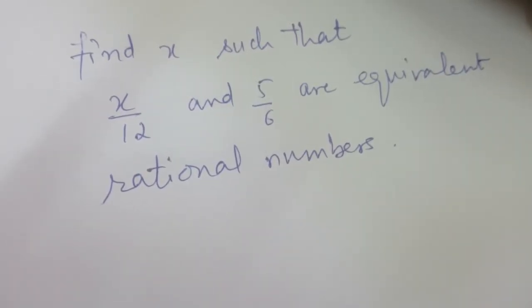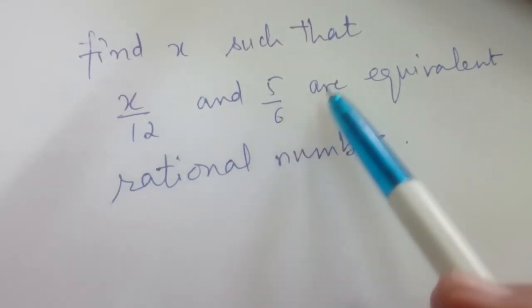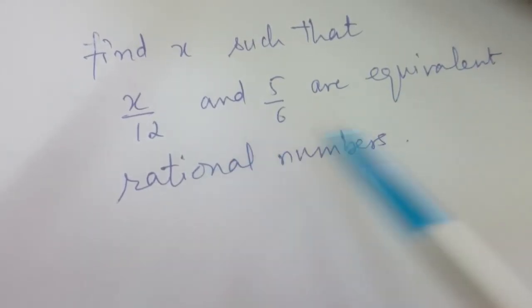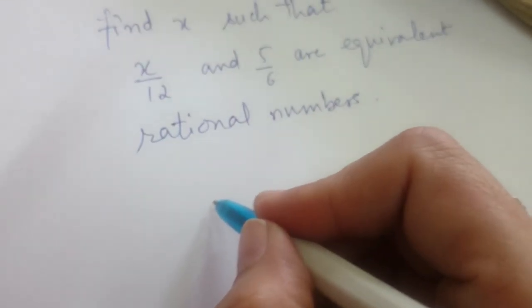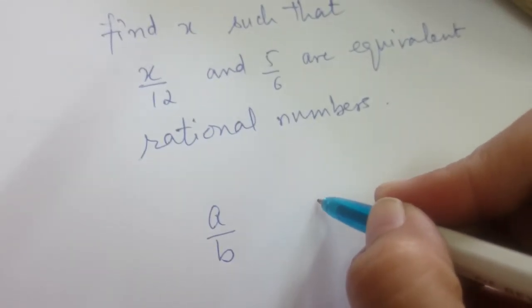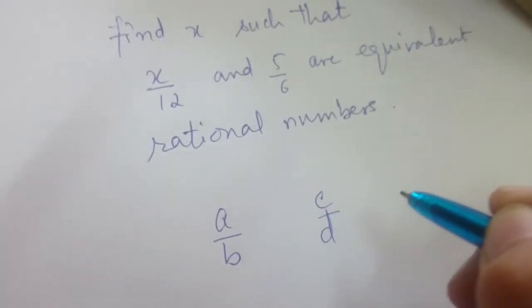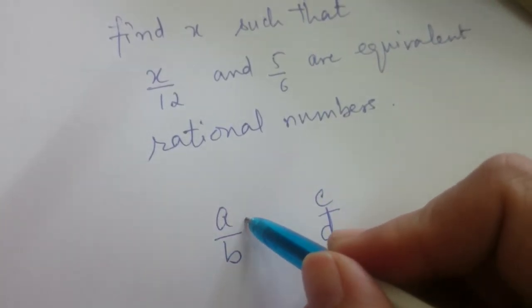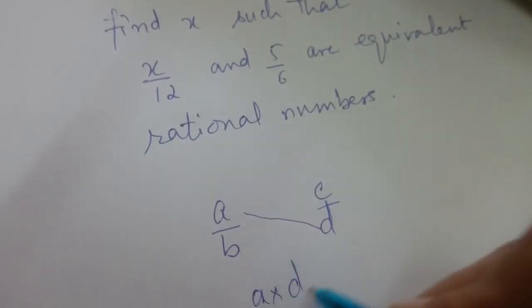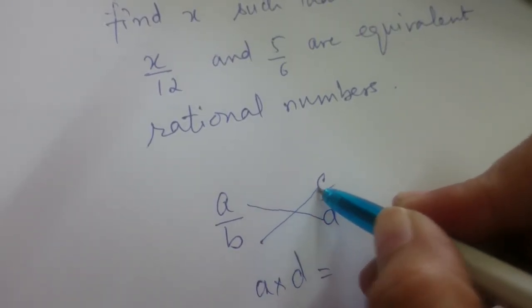We have to find the value of x such that x/12 and 5/6 are equivalent rational numbers. You know that a/b and c/d are equivalent rational numbers when a×d equals b×c.